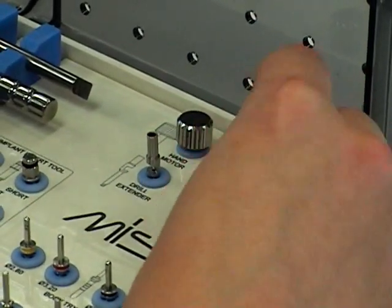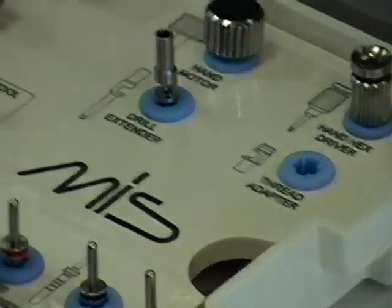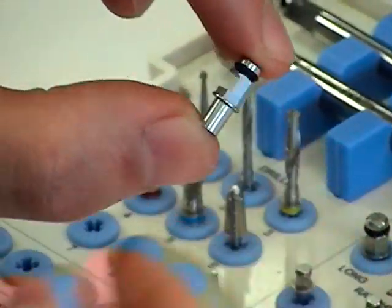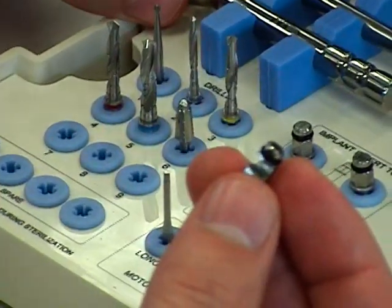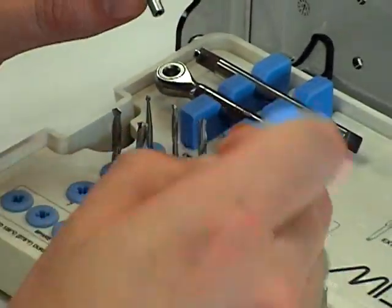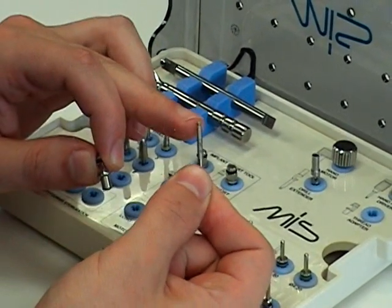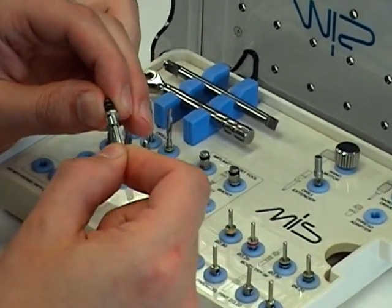Next up, we've got what's called the thread adapter. Originally called that because it was designed to modify the thread form type drills so they can be used with a wrench. It's also going to be used for anything that would fit what's called a latch type connection, which is the same as what goes into your handpiece, can go into the thread adapter.